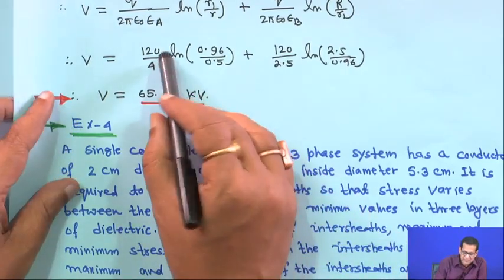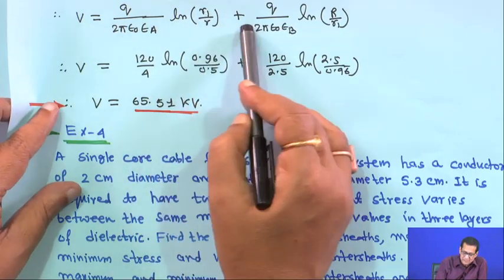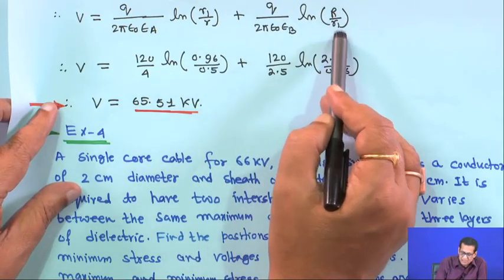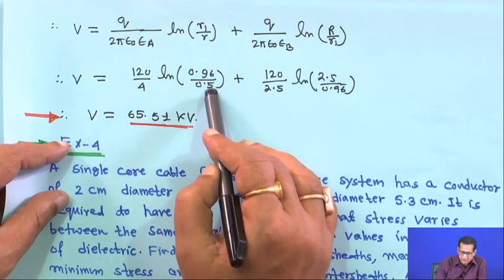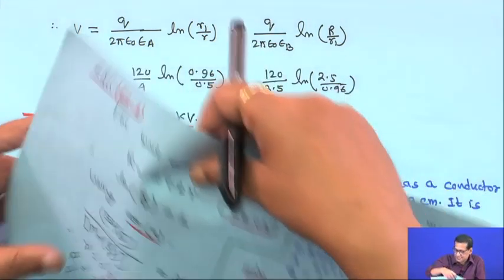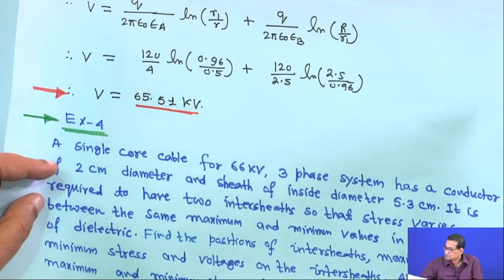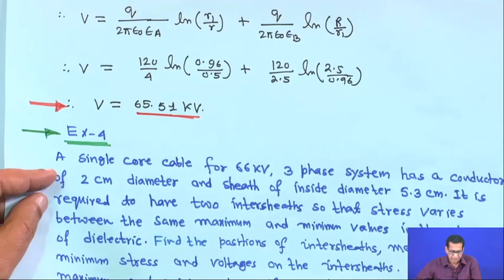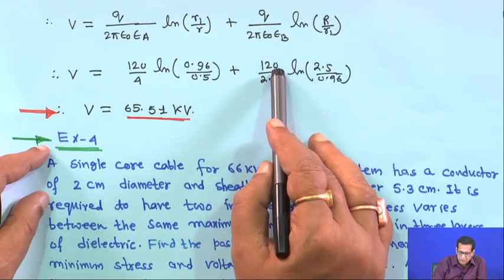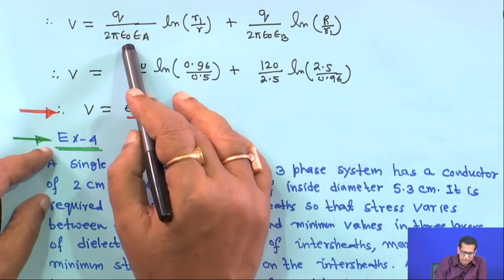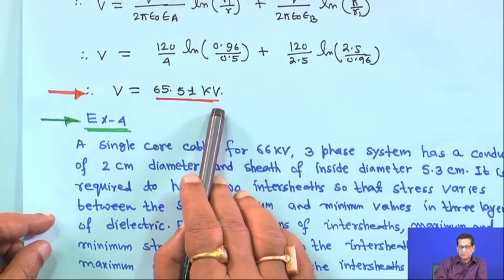For the voltage, using the general formula: V = [Q/(2π·ε₀·ε_A)] · ln(R1/r) + [Q/(2π·ε₀·ε_B)] · ln(R/R1). Substituting the known values — 120/4 times ln(0.96/0.5) plus 120/2.5 times ln(2.5/0.96) — gives V = 65.51 kV. A question to consider: is this a line-to-line voltage or a line-to-neutral voltage?